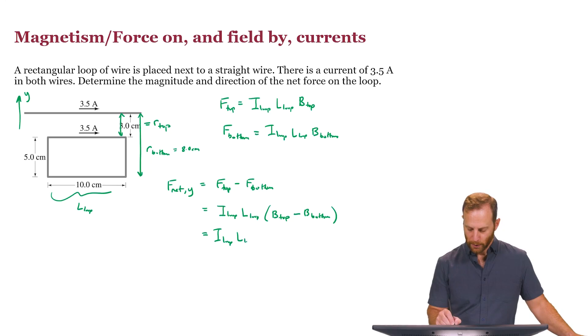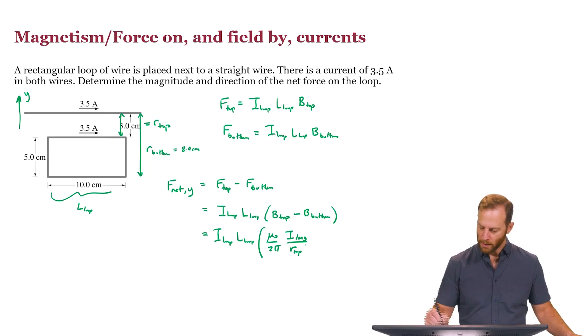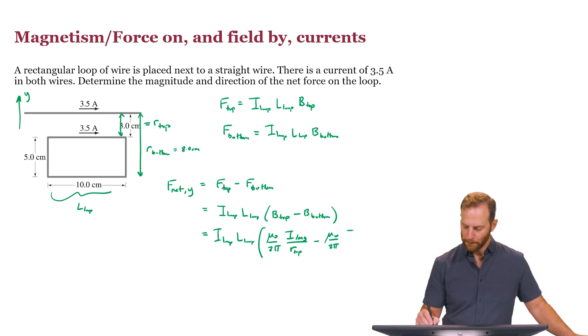The current in the loop, the length of the loop, mu-naught over two-pi, the current in the wire, in the long wire. Let me write that as I long. It's the same value, 3.5 amps, but R top minus mu-naught over two-pi, I long, R bottom.